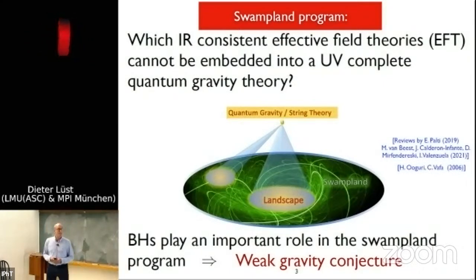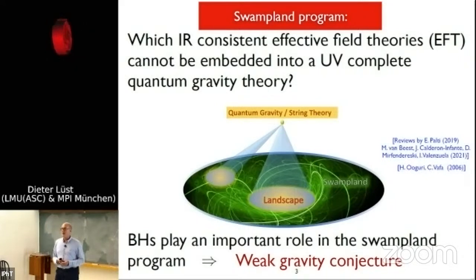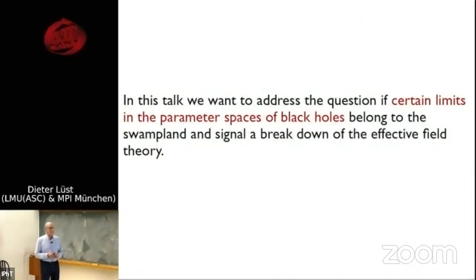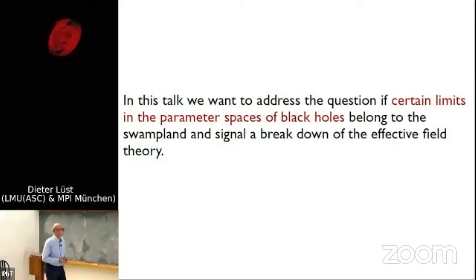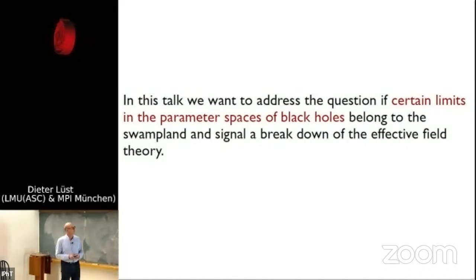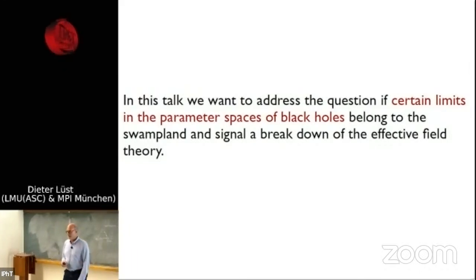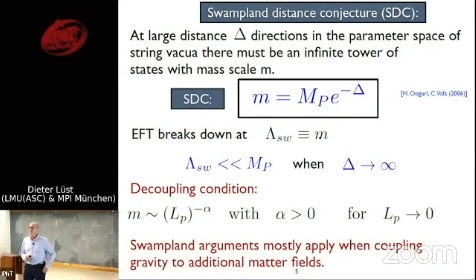Black holes play an important role in the swampland program — certain considerations about black holes were the starting point of famous swampland conjectures, in particular the Weak Gravity Conjecture, where the question of how black holes can or cannot decay leads to that conjecture. In this talk I want to address whether certain limits in the parameter spaces of black holes themselves belong to the swampland and signal a breakdown of the effective field theory. Black holes are well established, but in certain limits of their parameter space they can possibly belong to the swampland.